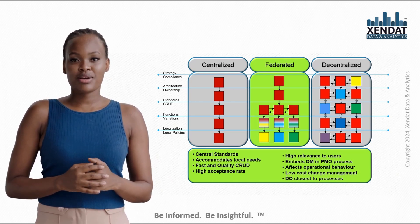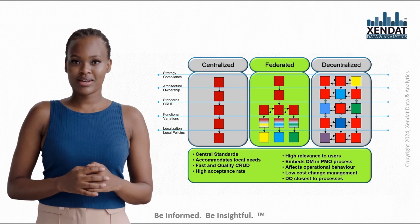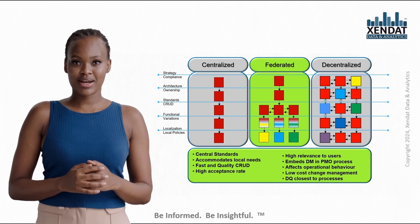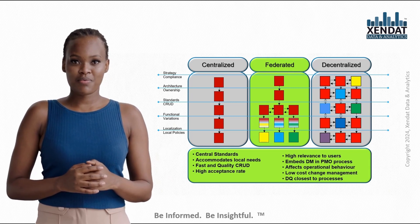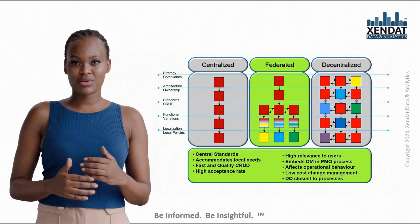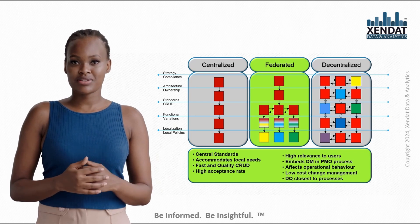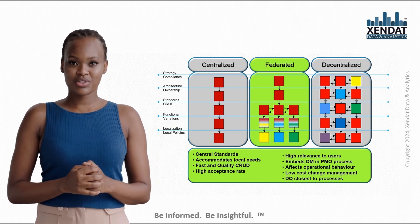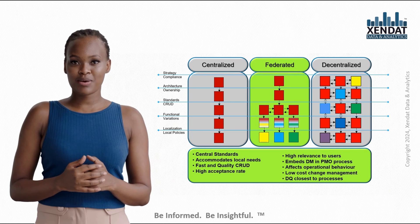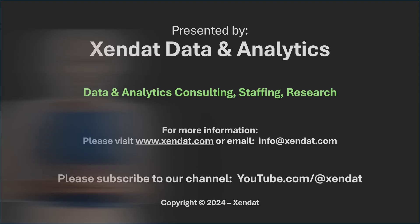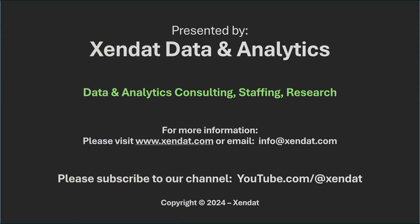To recap: centralized governance is consistent, but can feel rigid. Decentralized governance provides autonomy, but risks fragmentation. And federated governance strikes a balance, aiming for the best of both worlds. Choosing the right model depends on your organization's structure, data needs, and priorities. At Zendat, we help organizations navigate these choices, ensuring data governance aligns with business objectives while empowering everyone across the organization. Thanks for joining us, and don't forget to check out our other videos, where we dive deeper into each model and how they can be tailored to support your organization's data strategy.